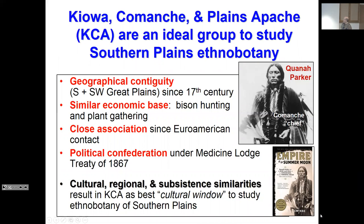My thesis is that the KCA are an ideal group to study Southern Plains ethnobotany for several reasons. They've been geographically contiguous for a couple hundred years. They had a similar economic base — basically hunting and gathering. They had a close association since Euro-American contact, and they confederated politically under the Medicine Lodge Treaty of 1867. From a cultural, eco-geographic, and economic standpoint, they were very similar, and there was much intermarriage.